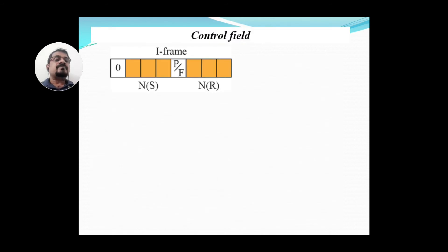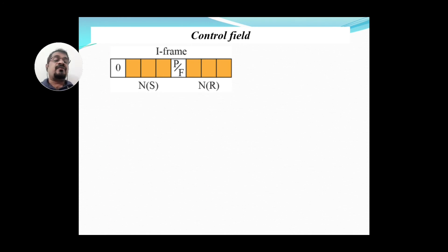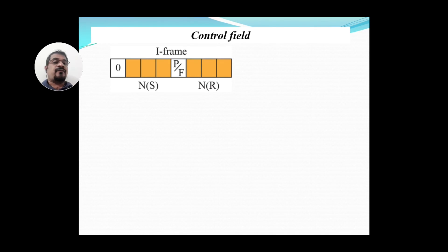In the control field, for an I-frame, if the control field starts with a zero, it is understood as an I-frame. The next three bits are the sequence number of frames already sent (Ns), and the last three bits specify the sequence number of frames received (Nr). In between Ns and Nr there is one bit — the Poll or Final bit. If it is Poll, the primary station selects the secondary; if Final, the secondary is giving a response.